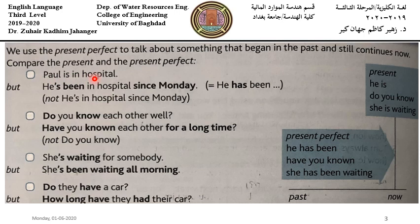Paul is in hospital — present simple. He has been in hospital since Monday — present perfect. Don't say 'he is in hospital since Monday.' Do you know each other well? — present simple. But: have you known each other for a long time? — present perfect.